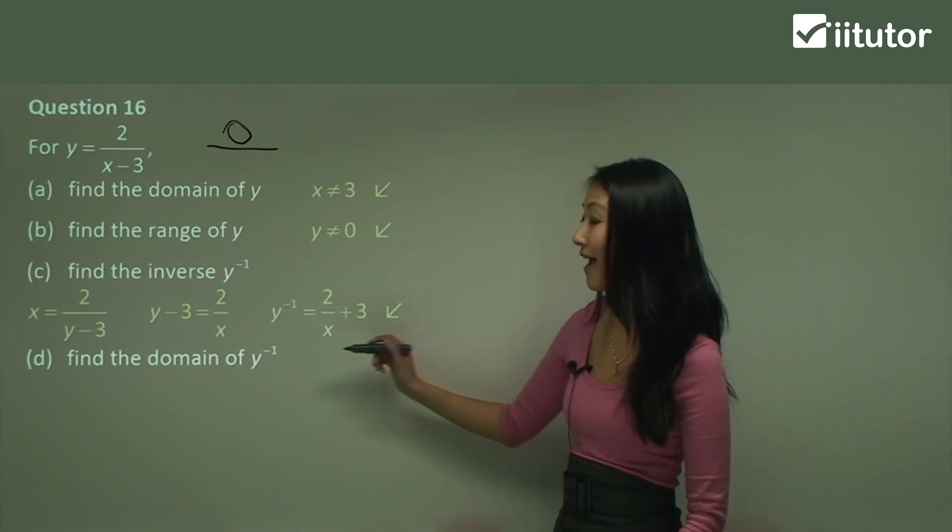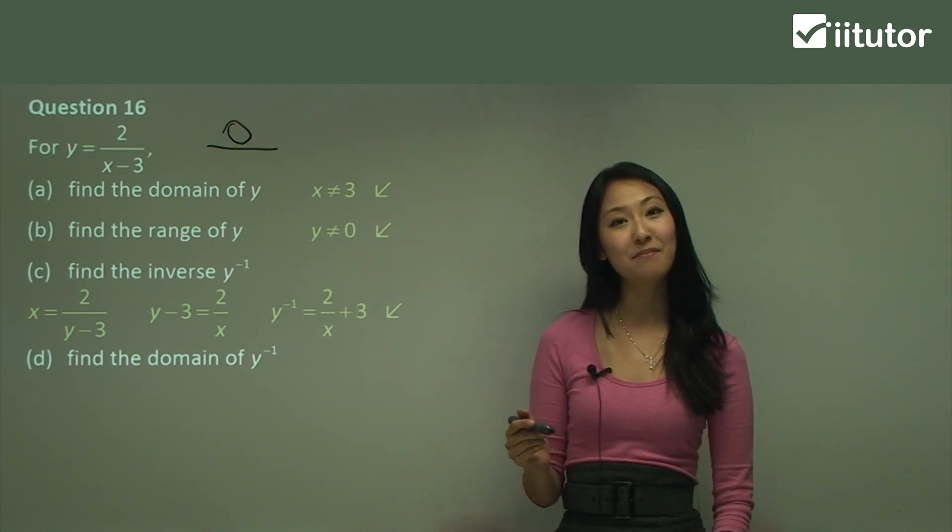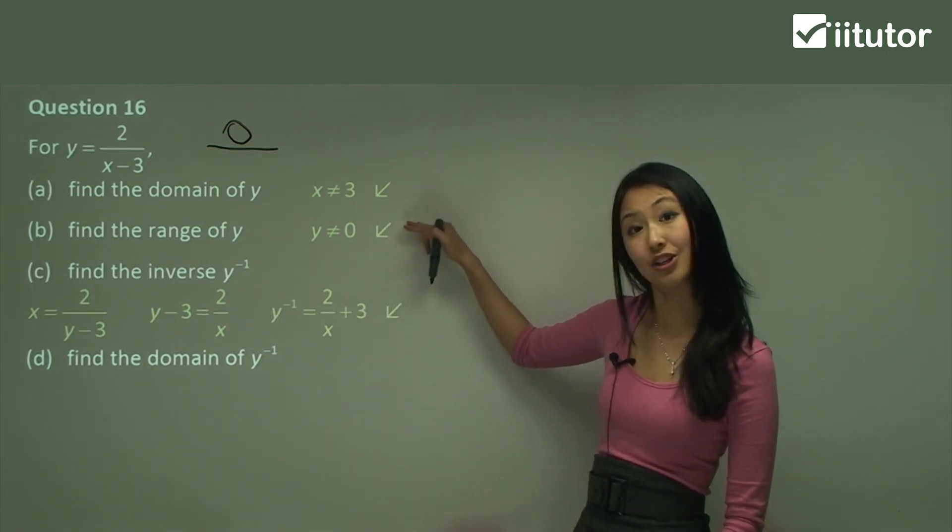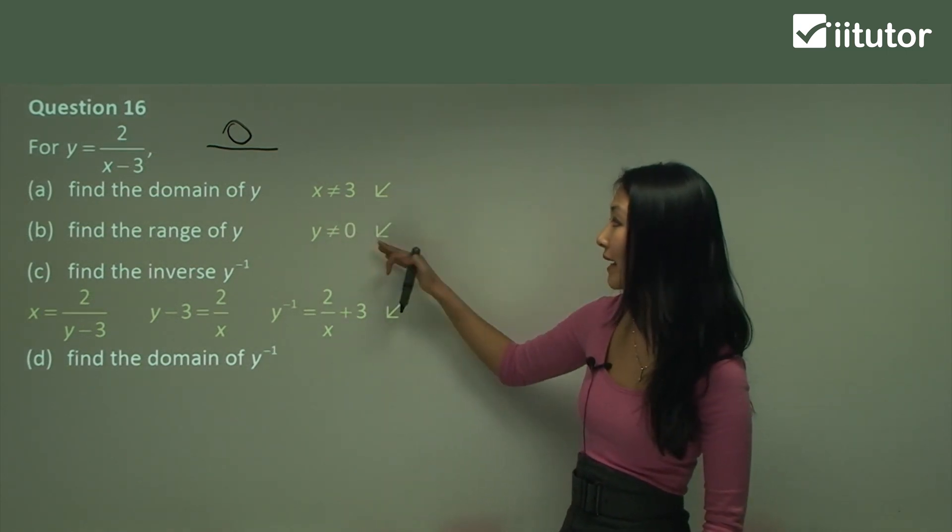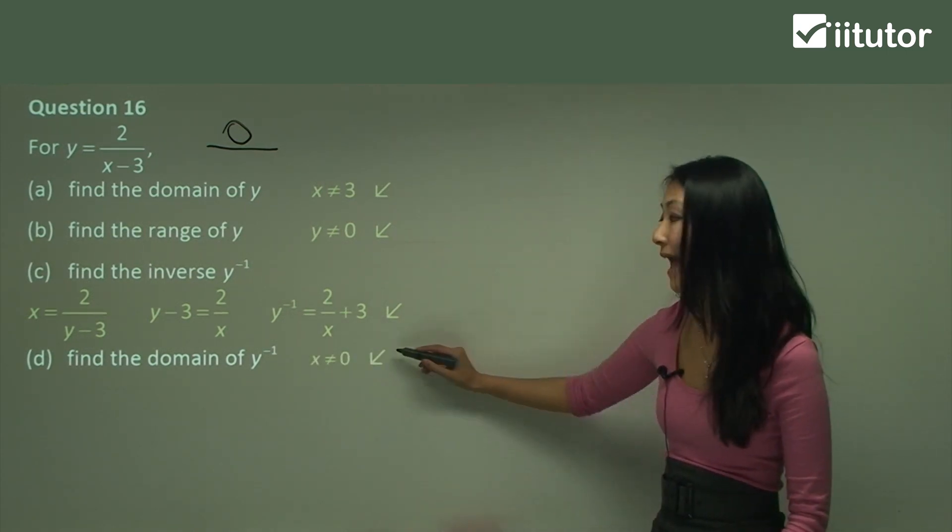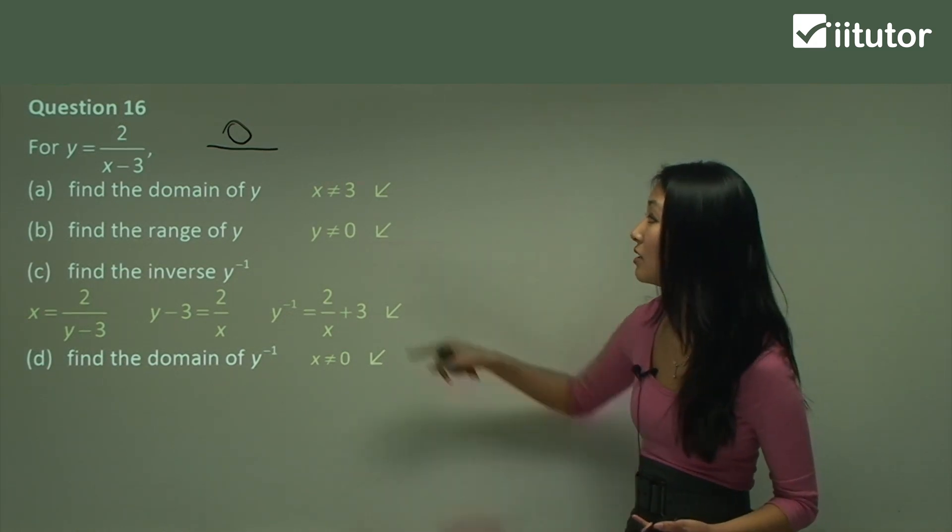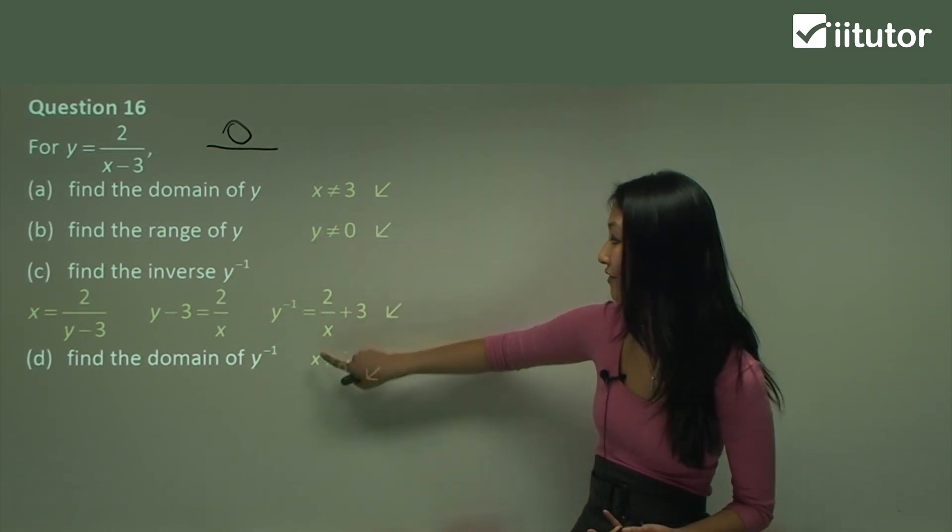Now the question asks us to find the domain of the inverse of the function. Now remember, the domain of the inverse was the range of the original, right? Which means that here we have y cannot equal 0. So the domain of the inverse is going to be x cannot equal 0. So essentially, you're doing the same thing. You're switching the y for x. So instead of y, I've just written x here.